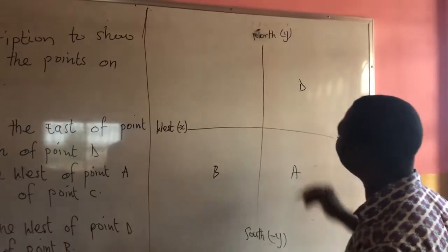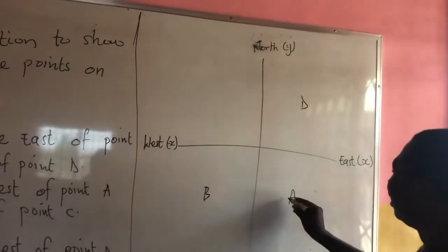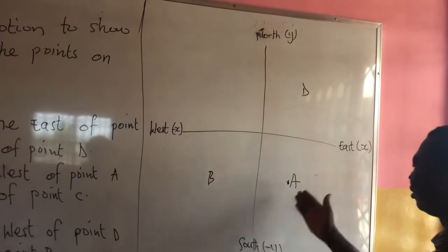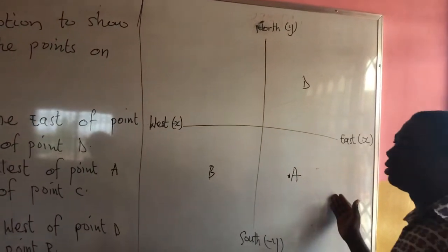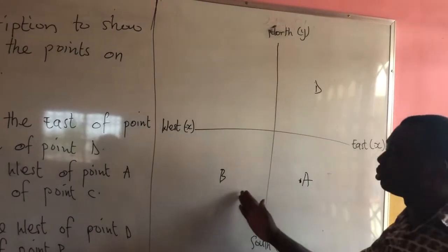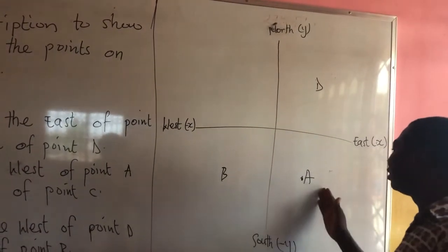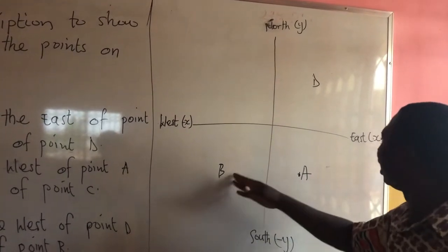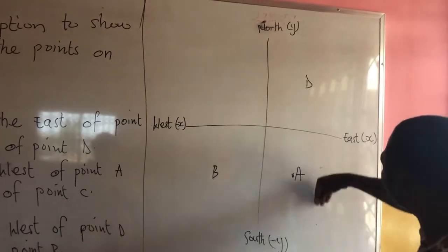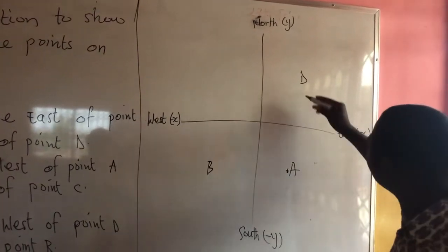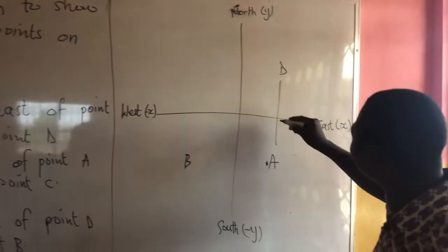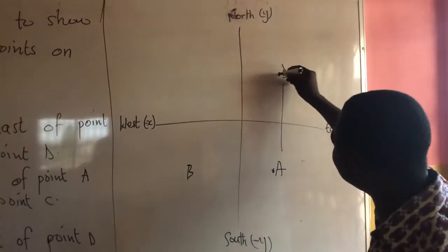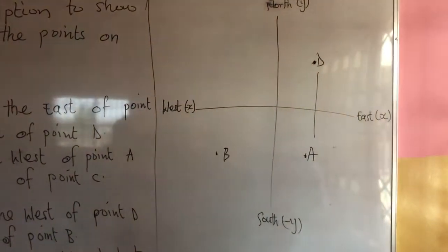Let me see it. So, we see point A is to the east — it is supposed to be at the east side of A, to the east of point D. And to the south — so down — to the south of point D.